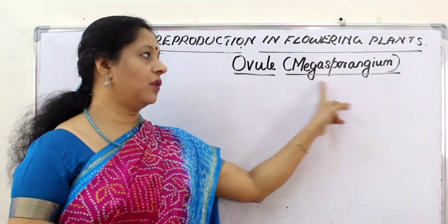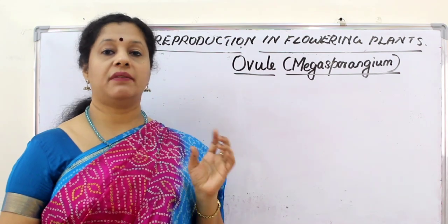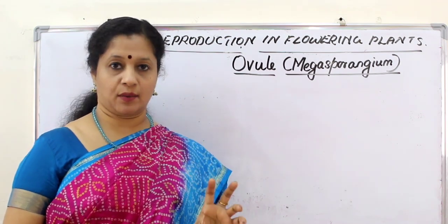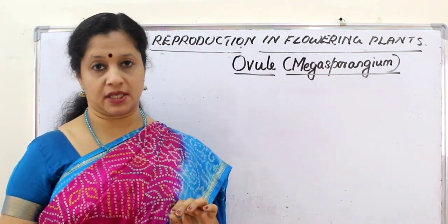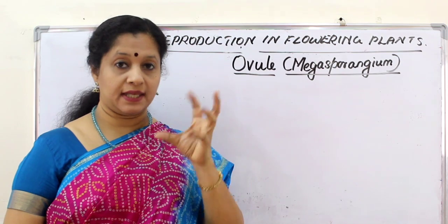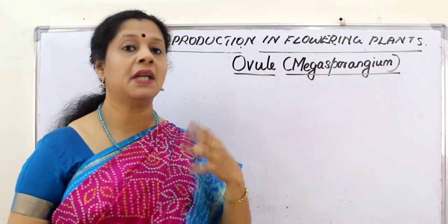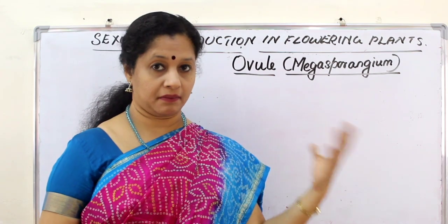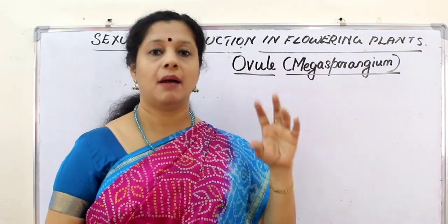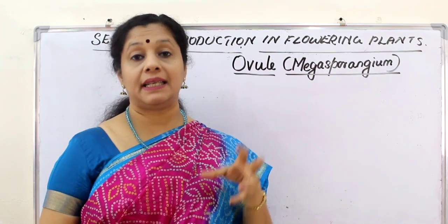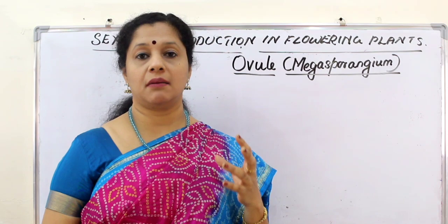Now let us study the ovule, or megasporangium. The ovule is the part within which the female gametophyte or embryo sac will form. The ovule is otherwise called a megasporangium because we use the prefix micro for pollen grain structures — microspore, microspore mother cell — but here we use mega, meaning big.